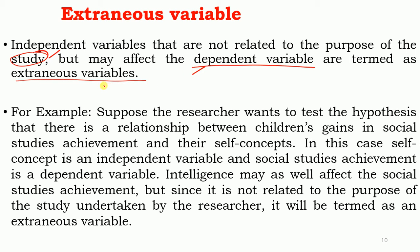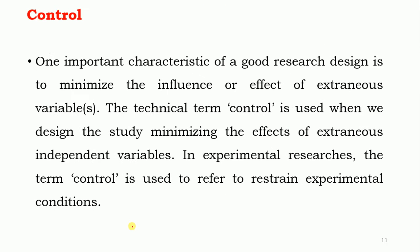To summarize the example: the researcher's study is about the relationship between children's gain in social studies achievement and their self-concept. Self-concept is the independent variable and social studies achievement is the dependent variable. Intelligence may affect social studies achievement but since intelligence is not related to the purpose of the study, it is called an extraneous variable.